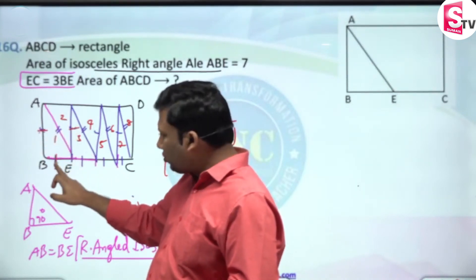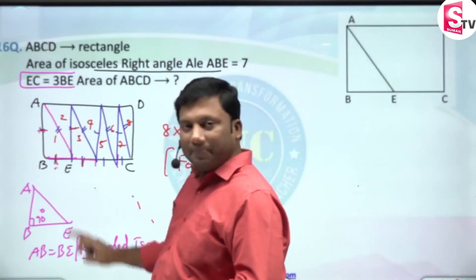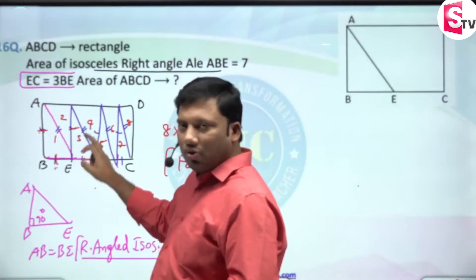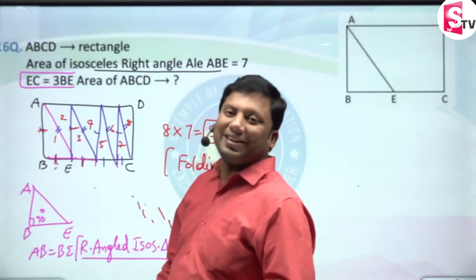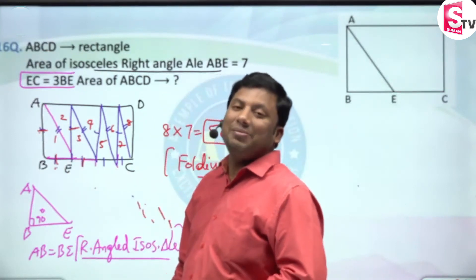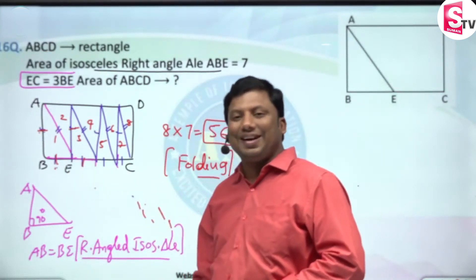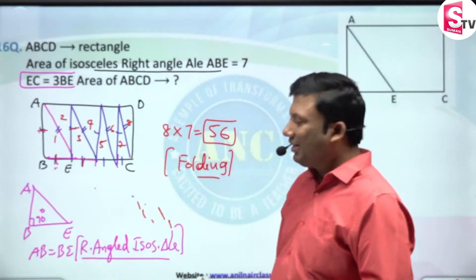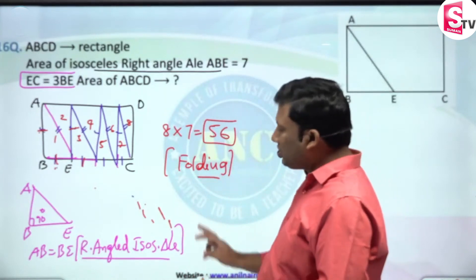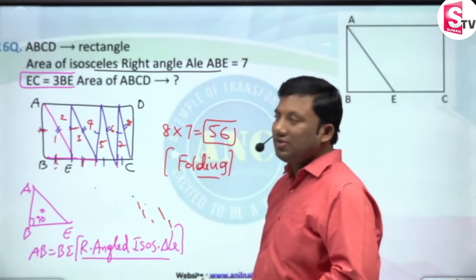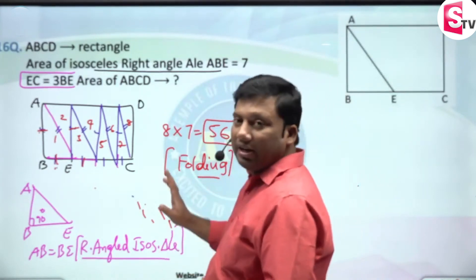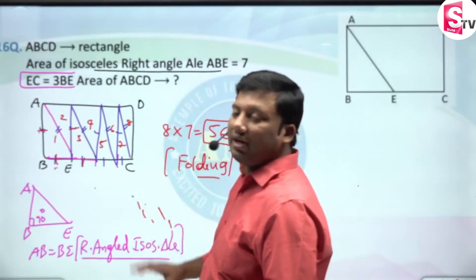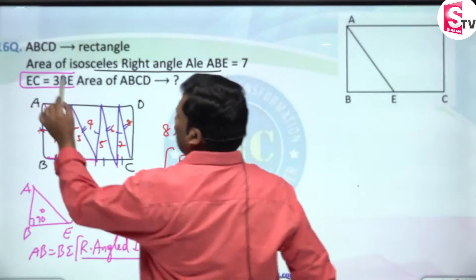These two are also the same: x, x, root 2x — like that. So I get 8 similar right-angled triangles. 8 into 7, the answer is 56.